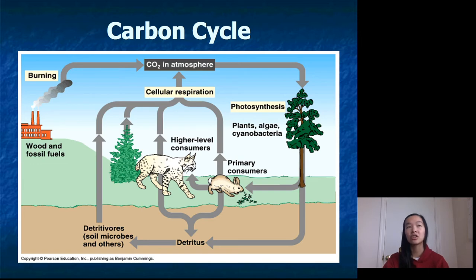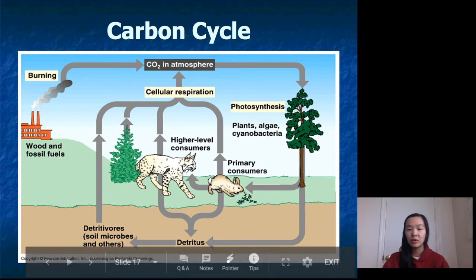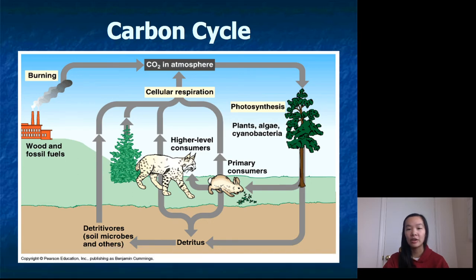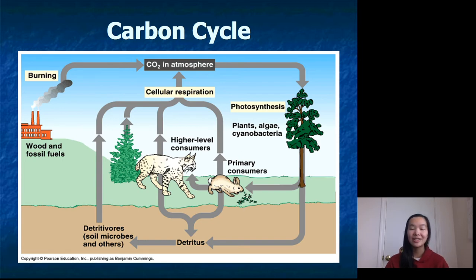We eventually eat the plant directly or indirectly. The plant turns carbon from CO2 into glucose or a sugar, and that's how we absorb carbon. Consumers get carbon through the plants, and then through cellular respiration we breathe out CO2, sending carbon back into the atmosphere. Additionally, when carbon gets stored in our bodies or a plant's body and we die, decomposers break down those once-alive bodies and release CO2 back into the atmosphere as well.